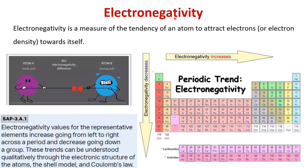Let me start with the basic property which is electronegativity. This property is responsible for the formation of bonds between two atoms. Electronegativity is the measure of the tendency of an atom to attract electrons towards itself. When a bond is formed between two atoms — atom A and atom B — and the electrons are attracted towards one of the atoms, that atom has high electronegativity. In a periodic table, electronegativity decreases as we move down the group and increases as we move from left to right in a period.